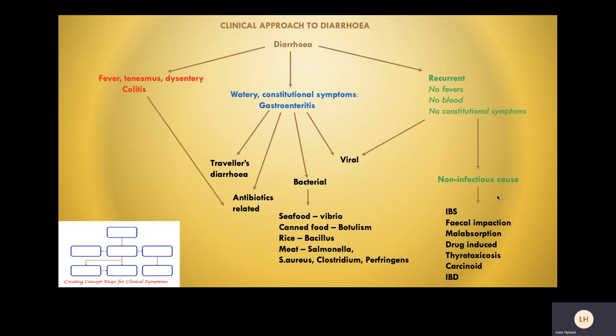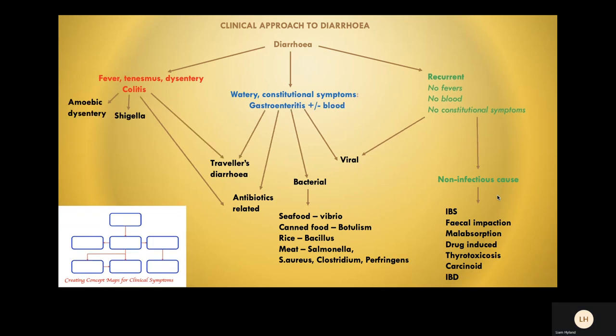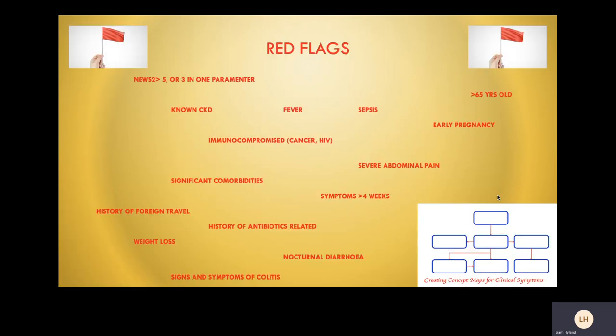As you can see, amoebic dysentery and Shigella toxin are among the causes that can give rise to colitis.